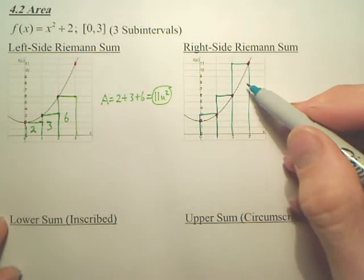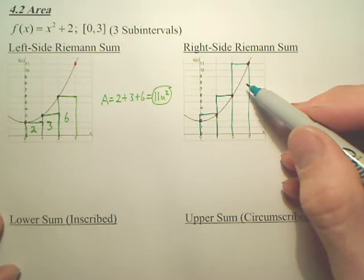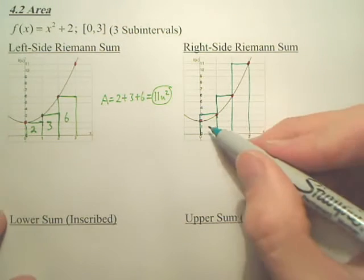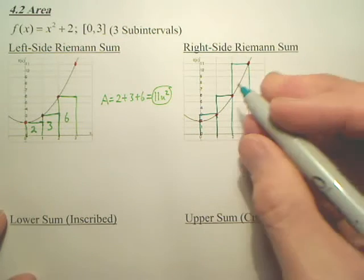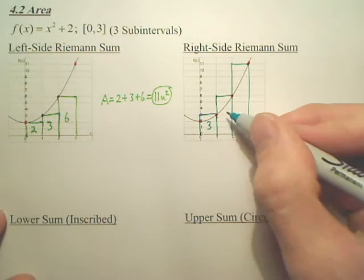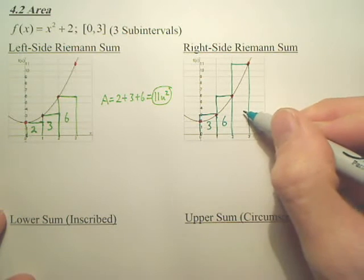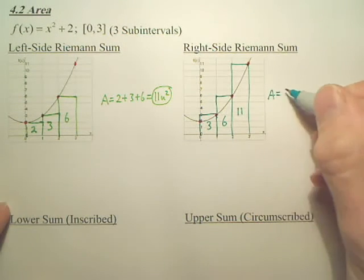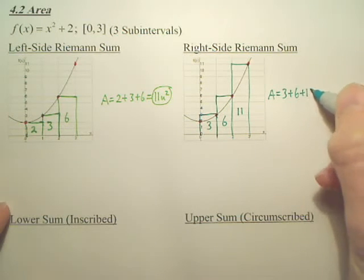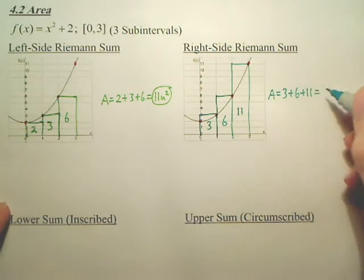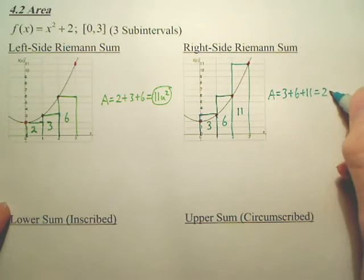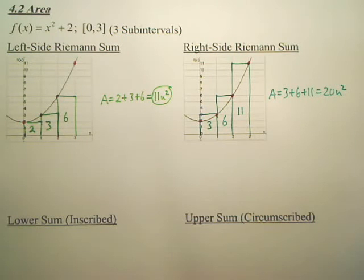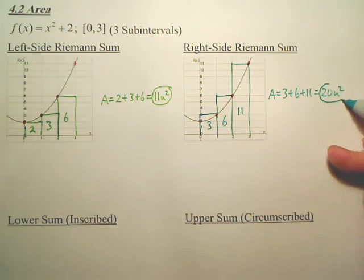Now, is this area going to be larger or smaller than the actual area under the curve? Isn't this larger? Because you can see that areas are above. Anyways, the area of this one is 3, correct? The area of this one is 6 and the area of this one is 11. So our area is 3 plus 6 plus 11, which is 20 square units.